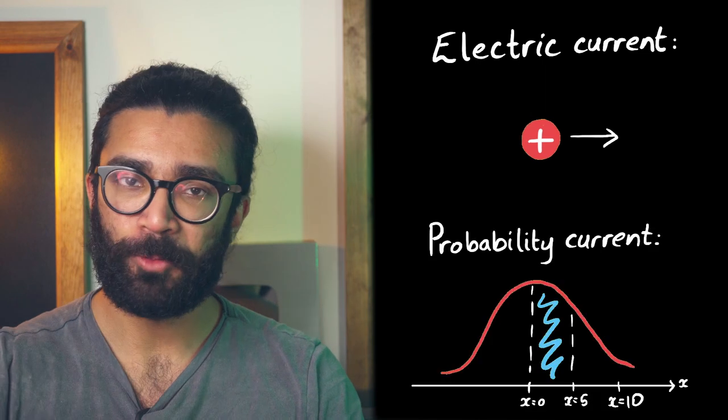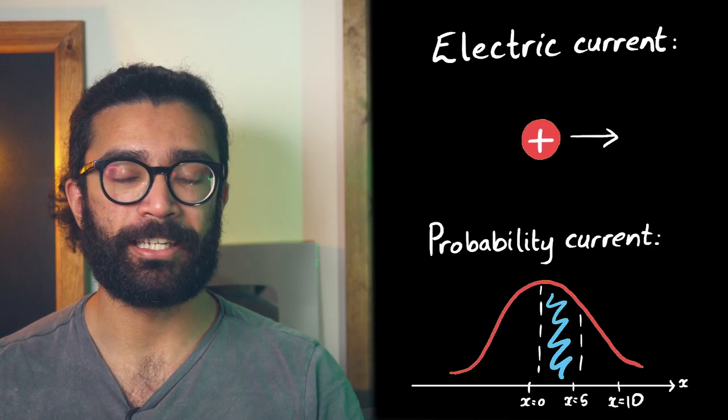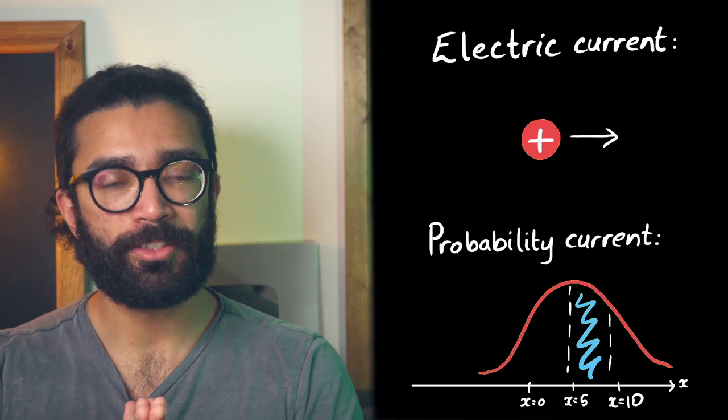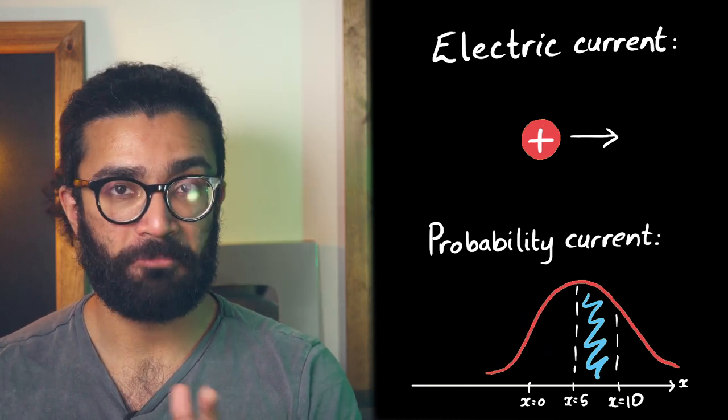And similarly, probability current represents the motion of probability, which is an abstract concept, but something that can be precisely calculated over time.